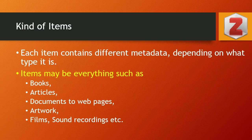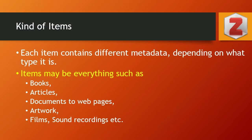Some of the well-known item types handled by Jotero include books, articles, documents, web pages, artworks, films, sound recordings, PDF files, and YouTube videos. All these items can be managed by Jotero very easily, and it also helps to organize them category-wise and make them searchable with the help of tagging.